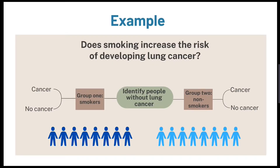A classic example of a cohort study is looking at whether smoking leads to lung cancer. To create the cohort study you would first need to identify people who do not have lung cancer and split them into two groups: those who smoke and those who do not. Over a period of time you will see who in the groups developed cancer and who did not.